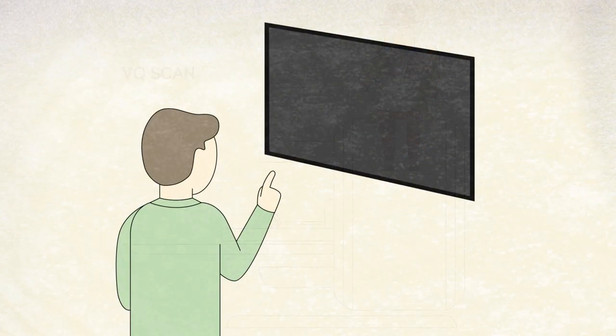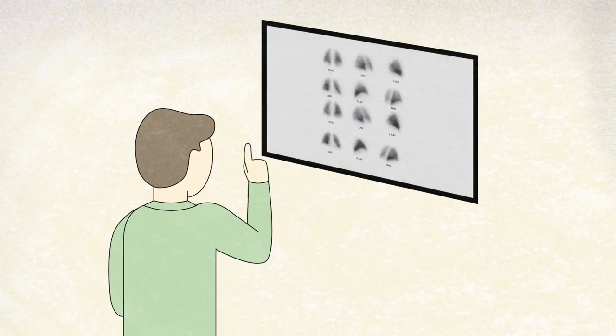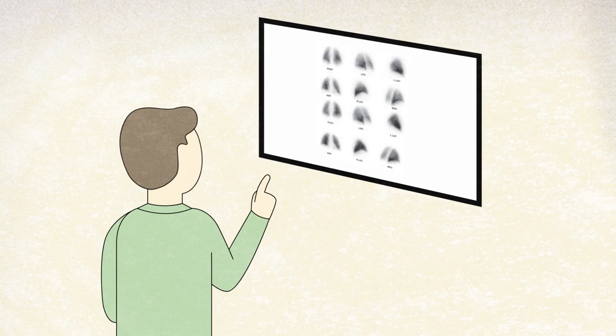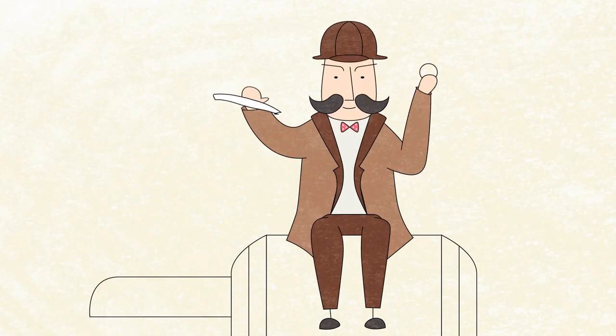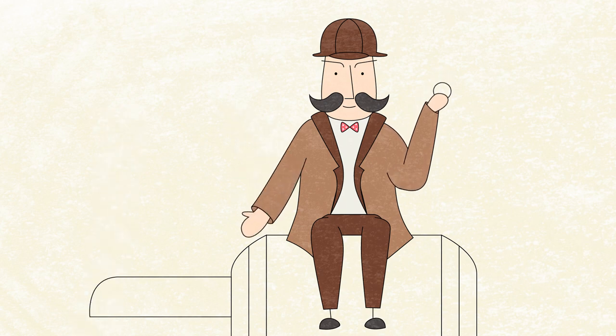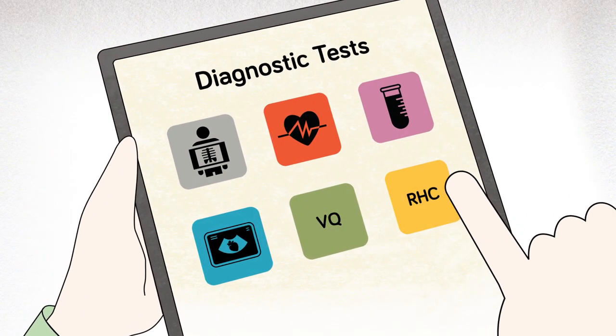Chronic thromboembolic pulmonary hypertension, also known as CTEPH, if identified, is the only type of PH which may be cured by surgery.